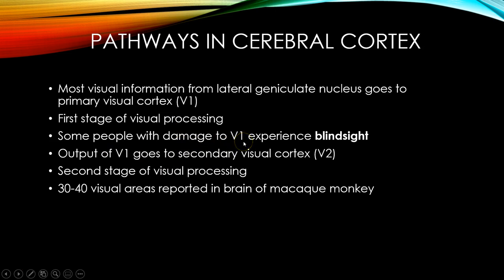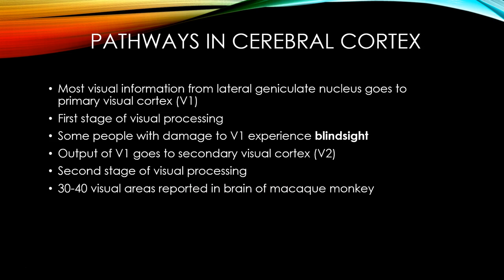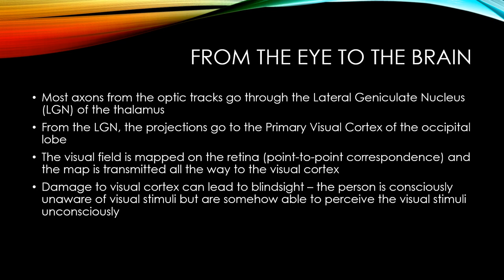After area V1, visual information is sent to another area called V2, or secondary visual cortex — our second stage of visual processing. Amazingly, there are 30 to 40 visual areas reported in the brain of a macaque monkey. Visual information sent to our brain is separated into many different areas, and different areas process different aspects of vision.